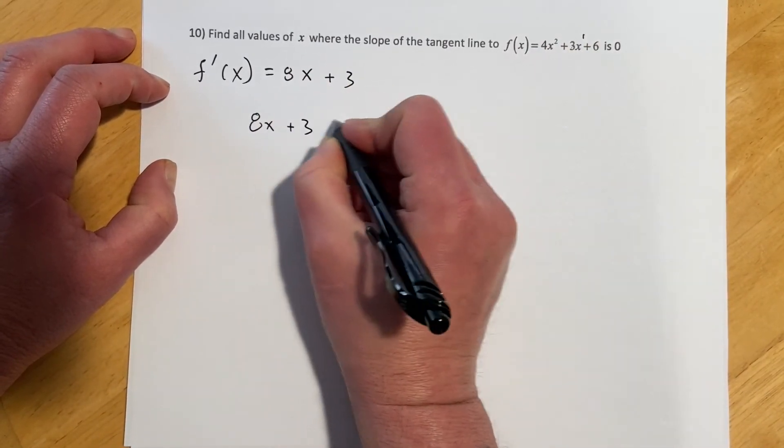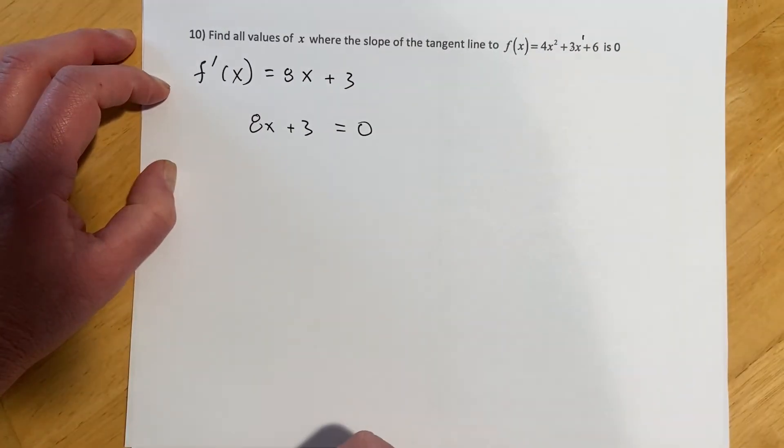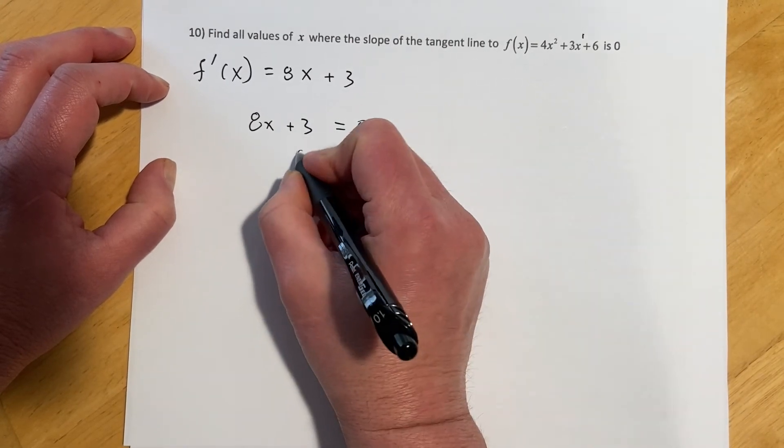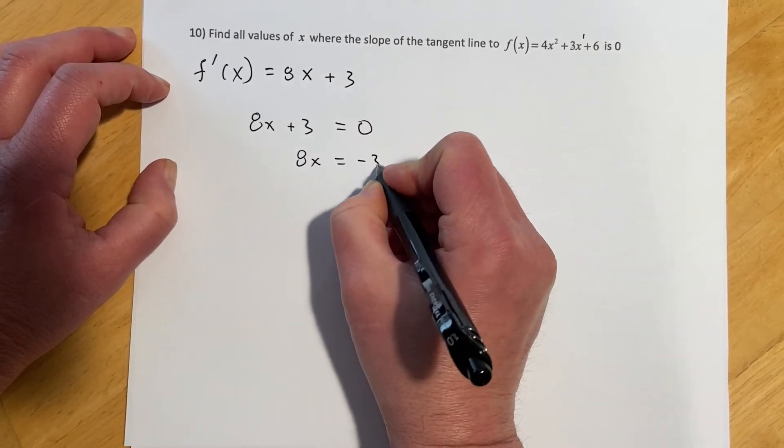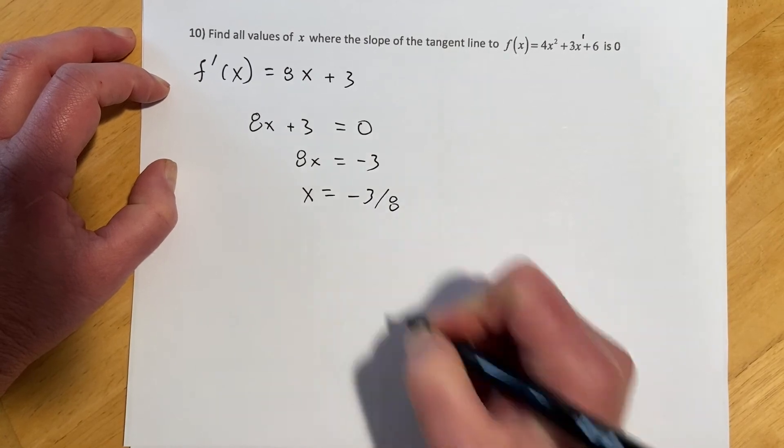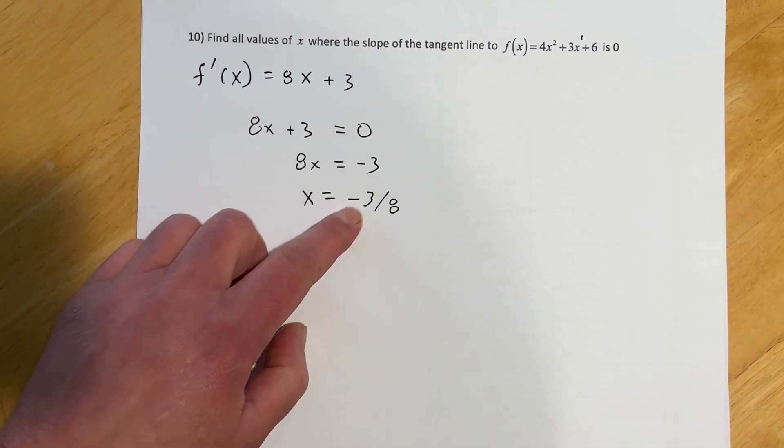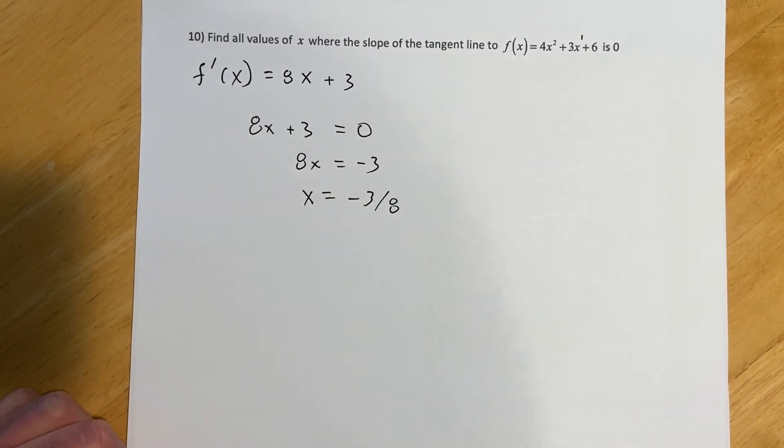So there's my derivative, and if I want to find where the slope is 0, that means that the derivative equals 0, and I just solve it for my x. Super easy. So I'll bring my 3 over, 8x equals negative 3, and it looks like x equals negative 3 eighths is where the tangent line would be 0.